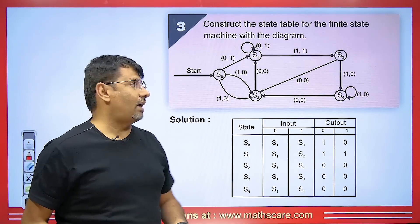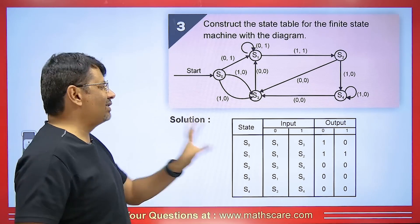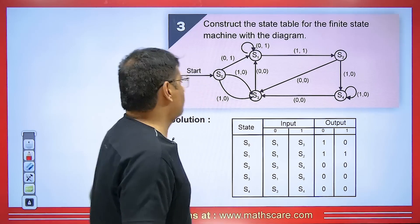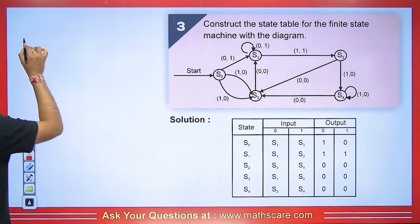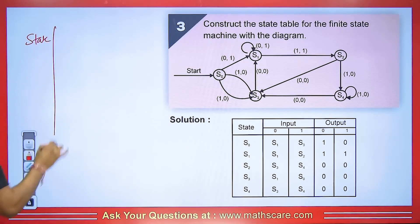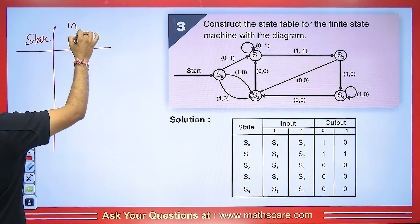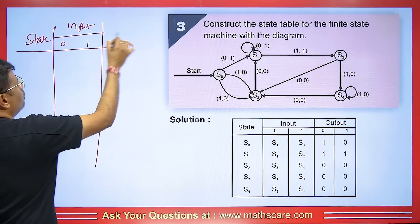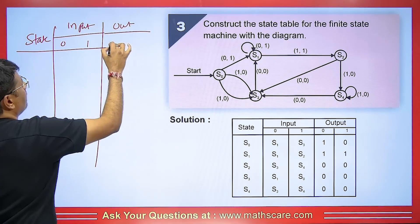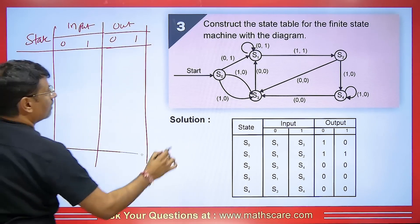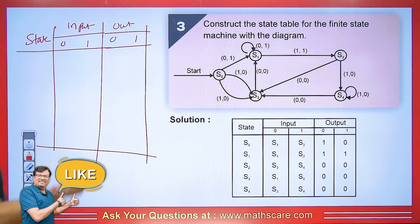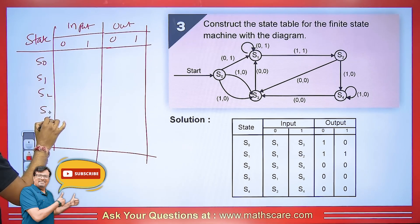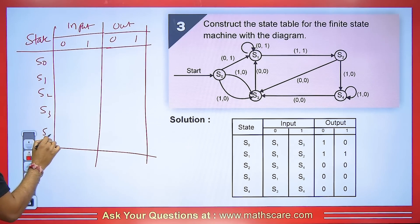In this question, a diagram is given with inputs and outputs of 0 and 1, and we have to construct the state table for the finite state machine. We write the state column, then input and output columns with 0 and 1. The states go from S0 through S4.